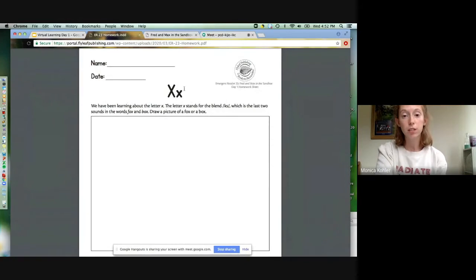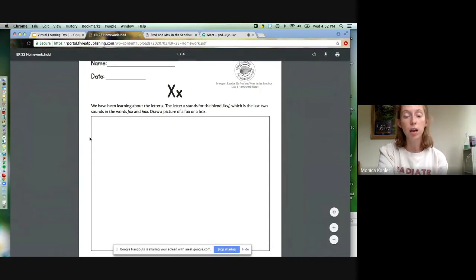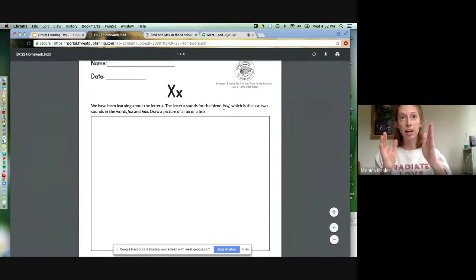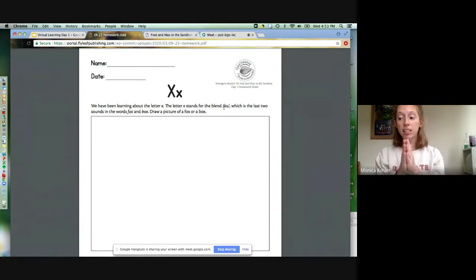So this is our first activity and we know this letter. What letter is that? That's right, it's X. And X says ks. This says we've been learning about the letter X. The letter X stands for the blend ks, which is the last two sounds in the words fox and box. Remember boys and girls, we talked about how X is like when you blend a K and an S together to make ks. It says draw a picture of a fox or a box. So when you get to this activity, you're going to draw a picture of a fox or a box.